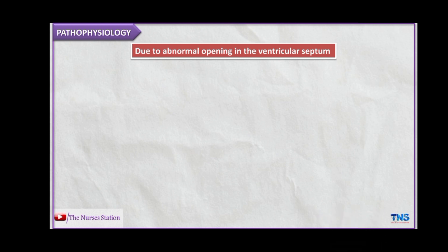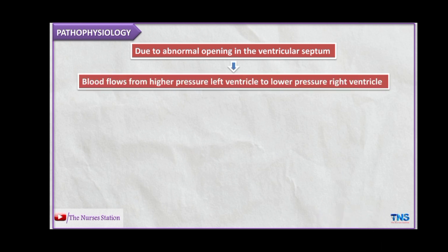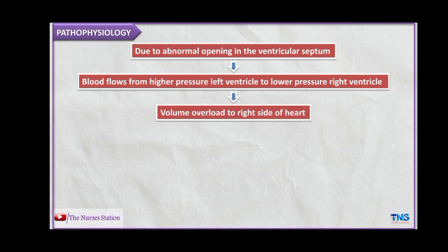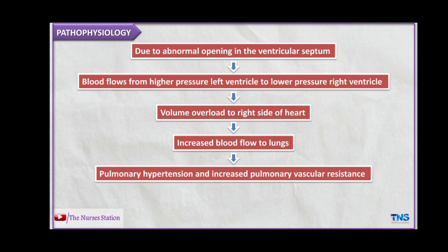In the pathophysiology, due to the abnormal opening in the ventricular septum, blood flows from the higher pressure left ventricle to the lower pressure right ventricle, leading to volume overload on the right side of the heart. This ultimately leads to increased blood flow to the lungs, since the right ventricle is overloaded with extra blood from the left ventricle through the VSD, causing pulmonary hypertension and increased pulmonary vascular resistance.